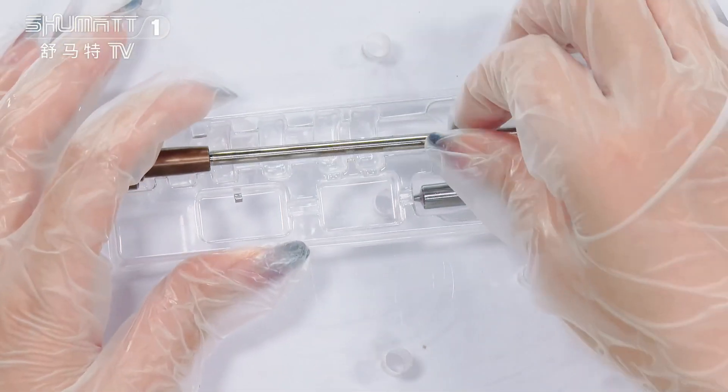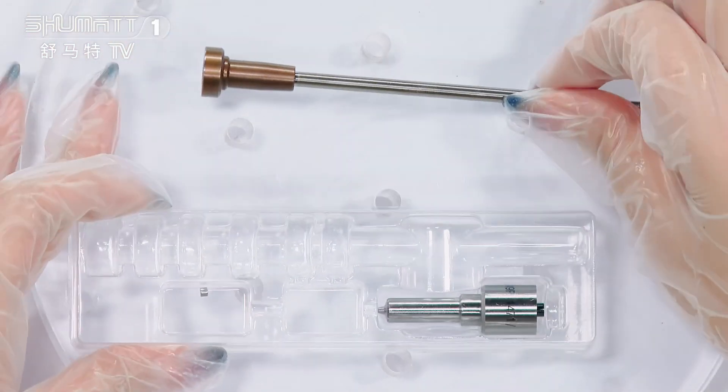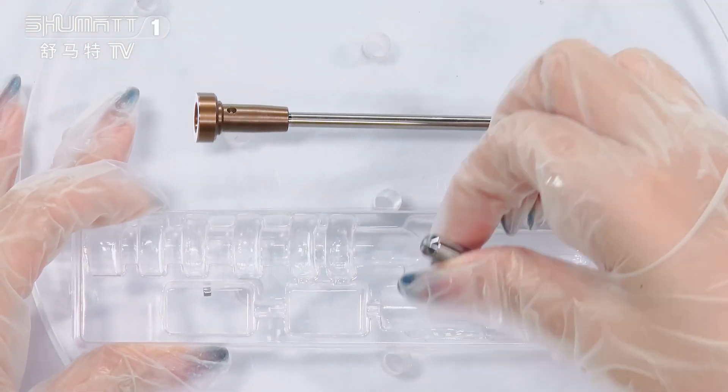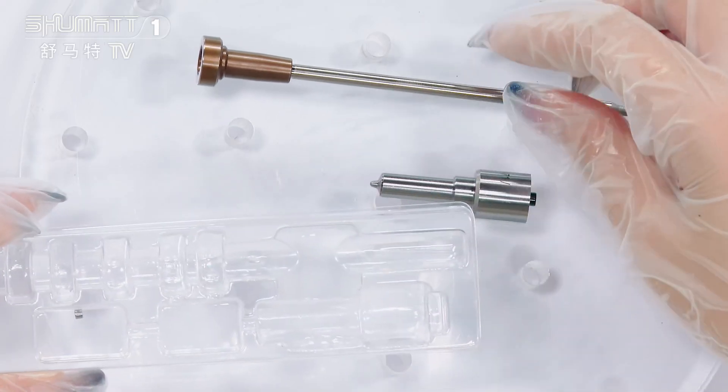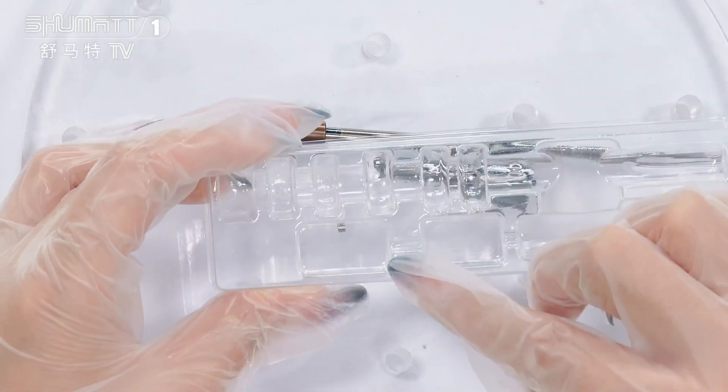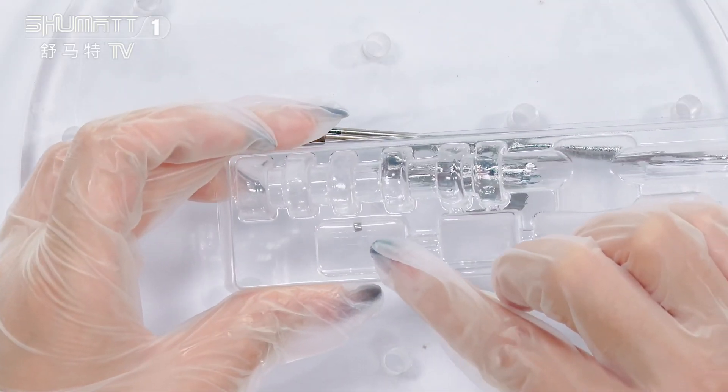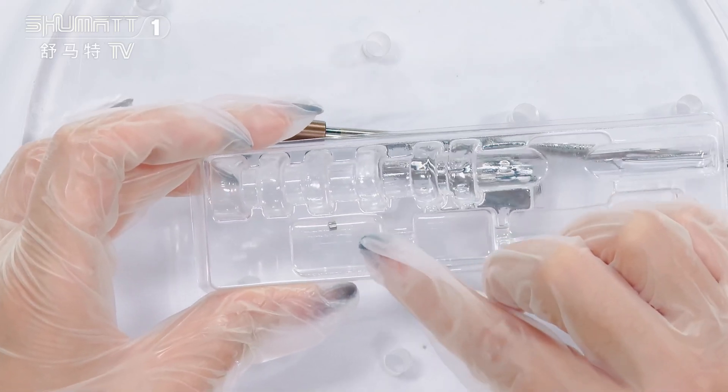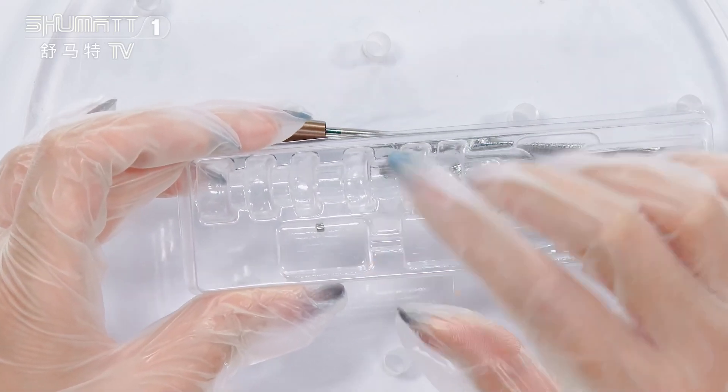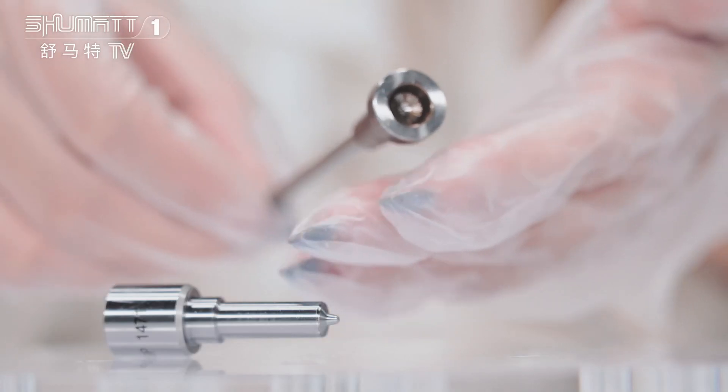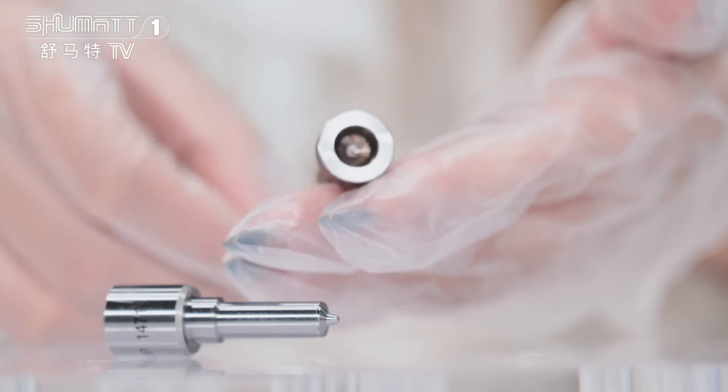This is the valve assembly and the injector nozzle inside, and here also with one accessory. It is too small, yes, so you can see it clearly. This is the valve assembly here for this injector. The injector nozzle.